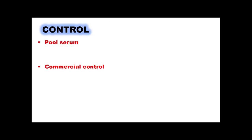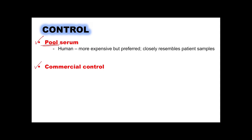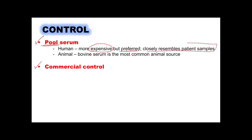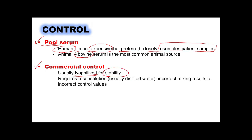For types of control solutions, we have pooled serum and commercial controls. Pooled serum is obtained from different individuals mixed together into one control solution, from human or animal sources. Human sources are more expensive but preferred because they resemble patient samples. The most common animal source is bovine serum. Commercial controls are already prepared by the manufacturer, usually lyophilized, more stable, and require reconstitution. Incorrect mixing results in incorrect control values.